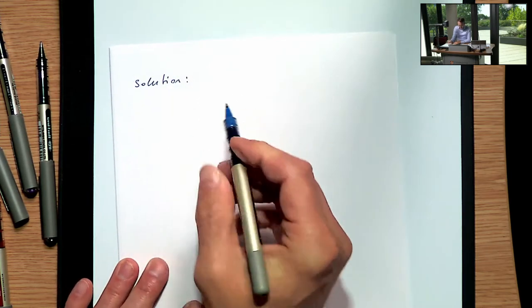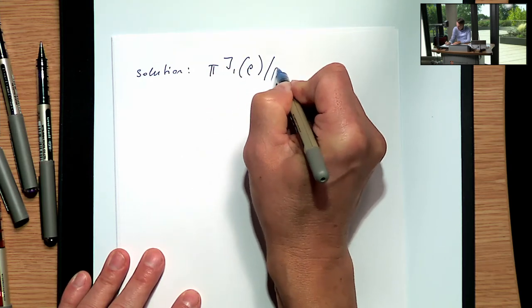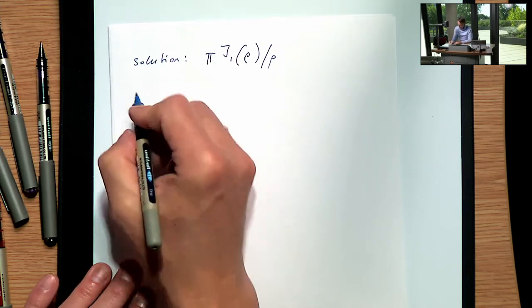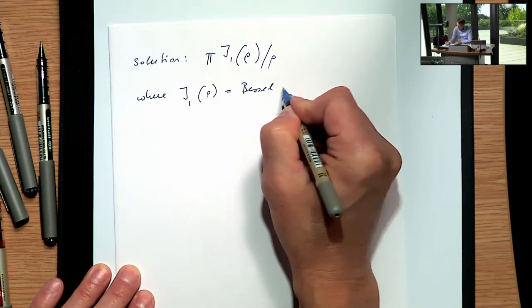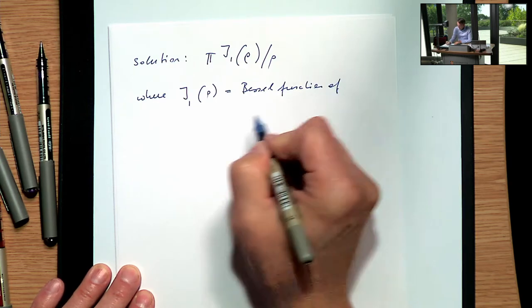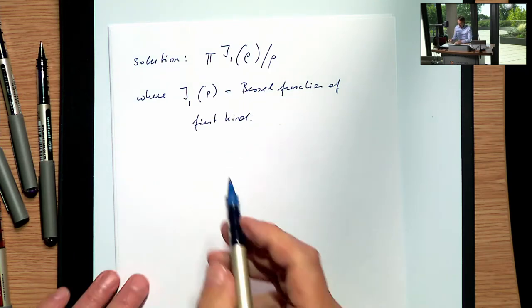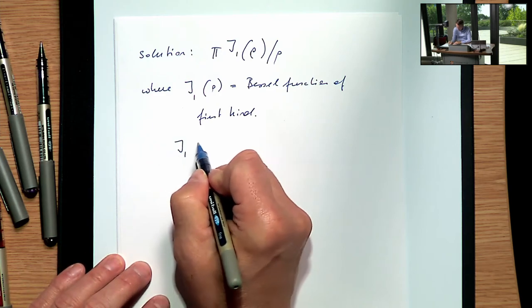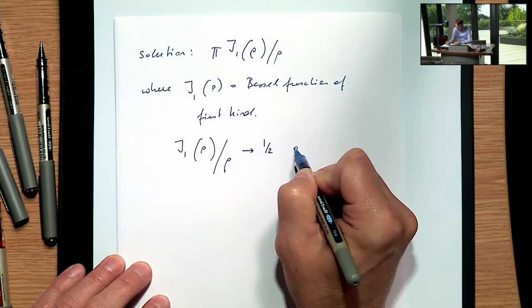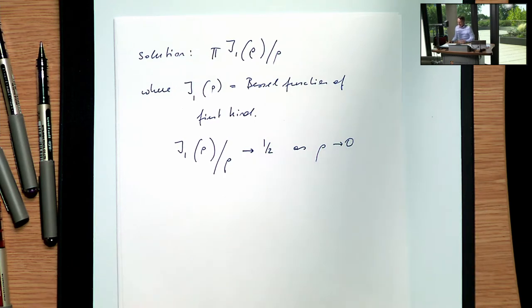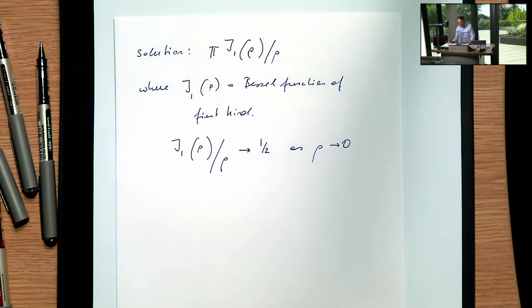The standard result for this integral is π·J₁(ρ)/ρ, where J₁(ρ) is a Bessel function of the first kind. It can be looked up in a data book. The function J₁(ρ)/ρ goes to one half as ρ → 0.